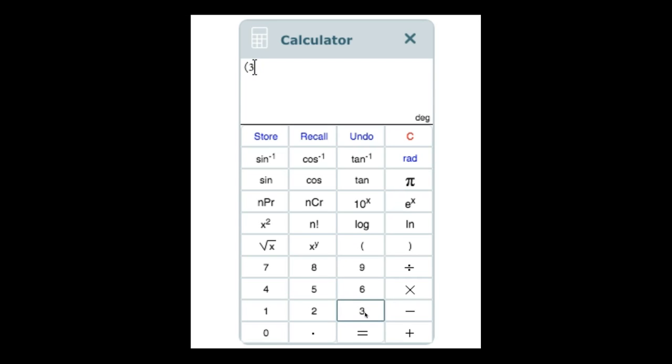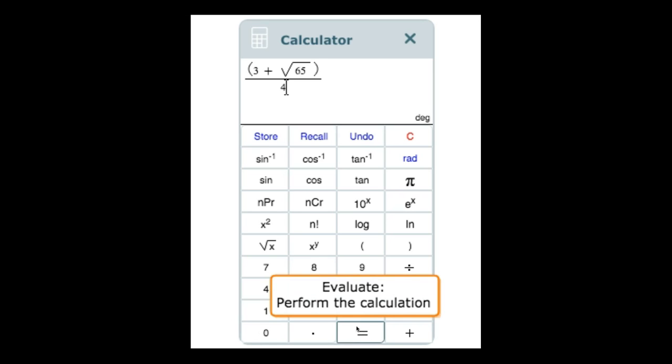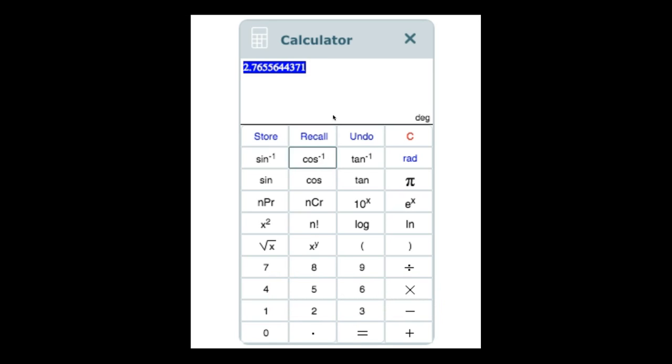Parentheses, 3 plus square root button, 65, then move the cursor out of the square root, close parentheses, divided by 4, which equals, rounded to the nearest hundredth, 2.77.